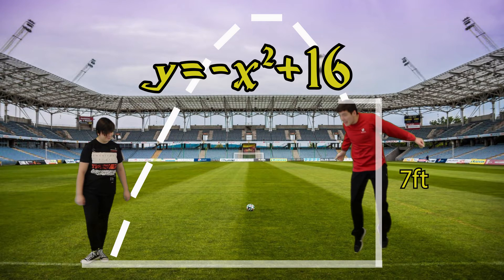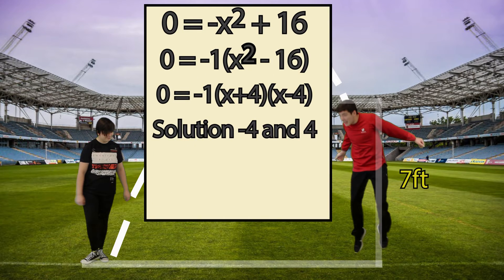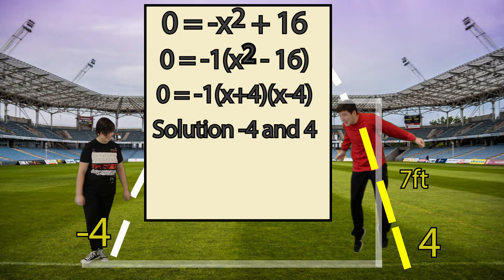If you said 8 feet, you're close, but not quite there. Let's solve for x by factoring when our height is 0. You see, Desmond is located at negative 4, and our other intercept is located at 4.